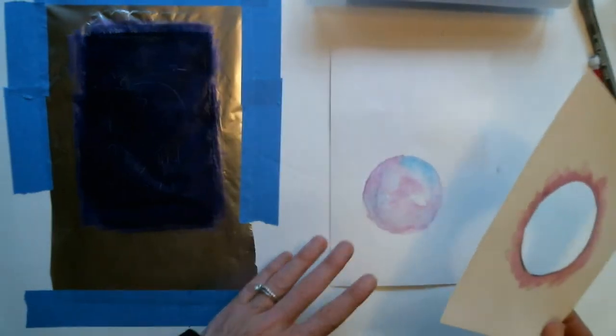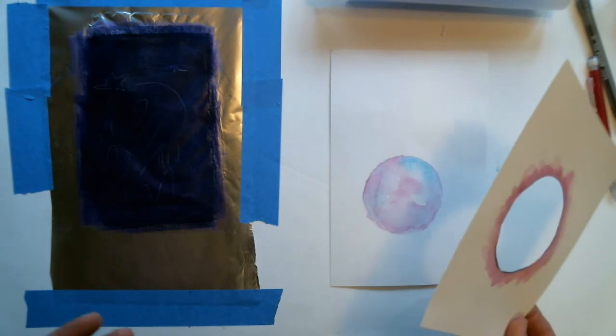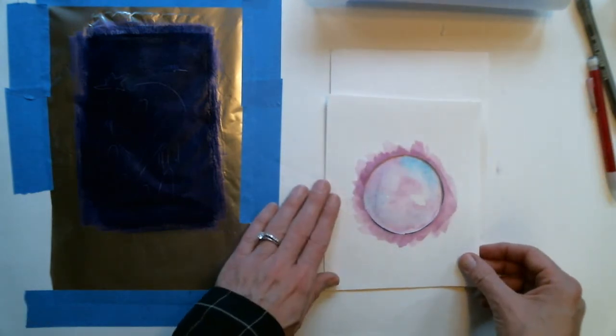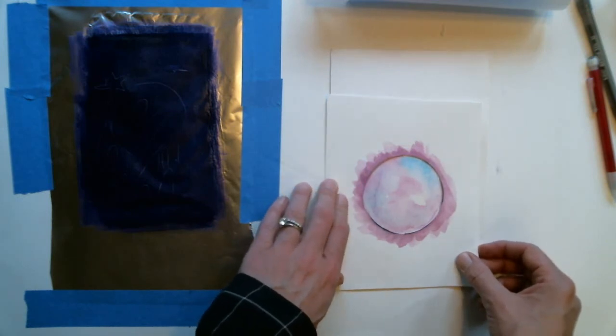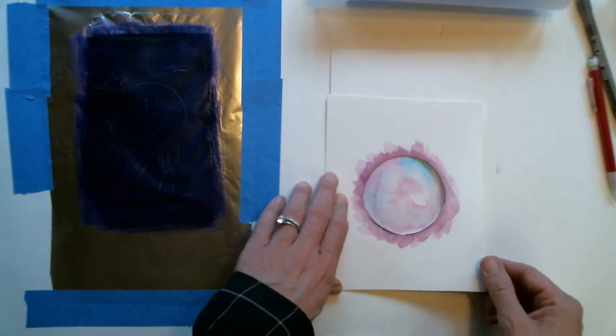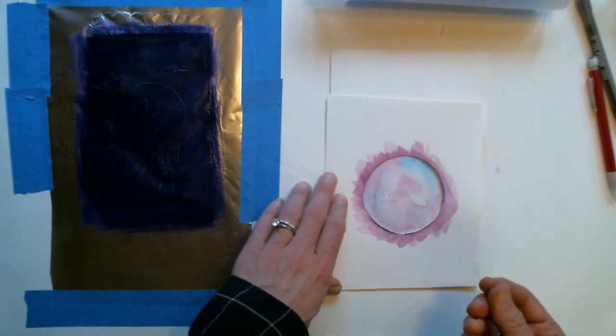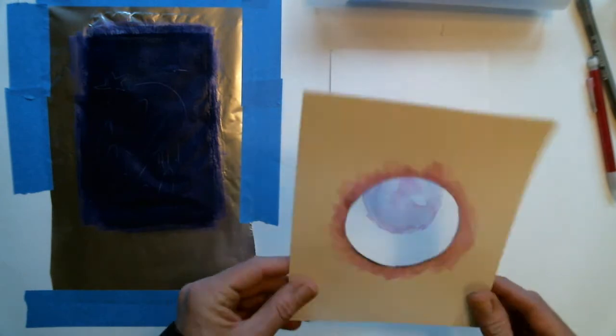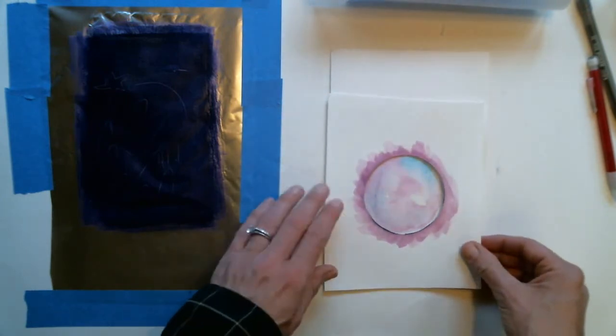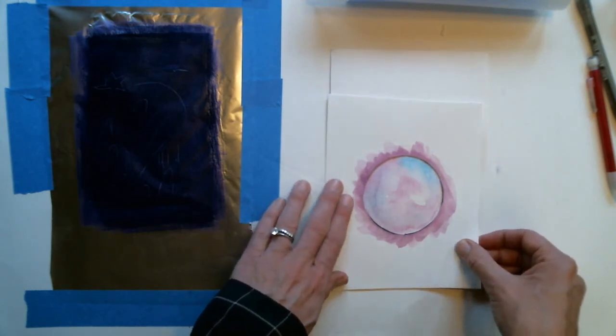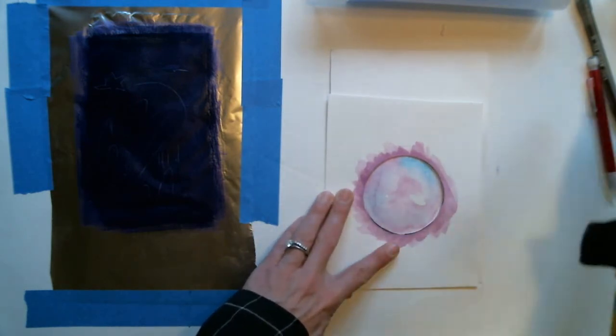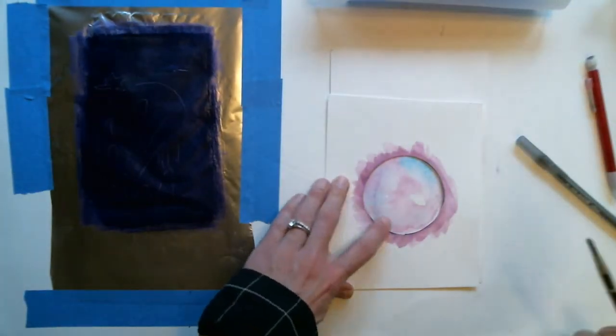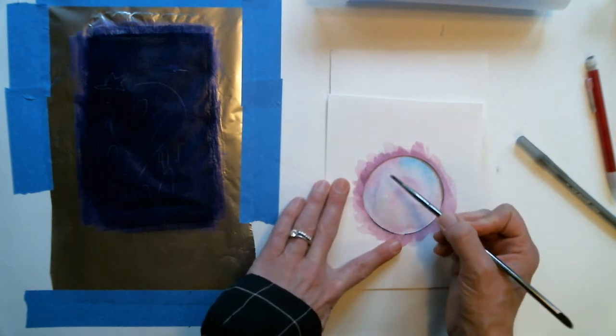If you're going to use stencils, this should remind you a little bit of silkscreen, because silkscreen is a stencil technique. You can use stencils that are made out of any material. You could cut them out of tracing paper, you could use sketchbook paper, but just know that if you're using a thinner paper, it's not going to hold up as well. This stencil I've already used four or five times and it hasn't buckled yet.